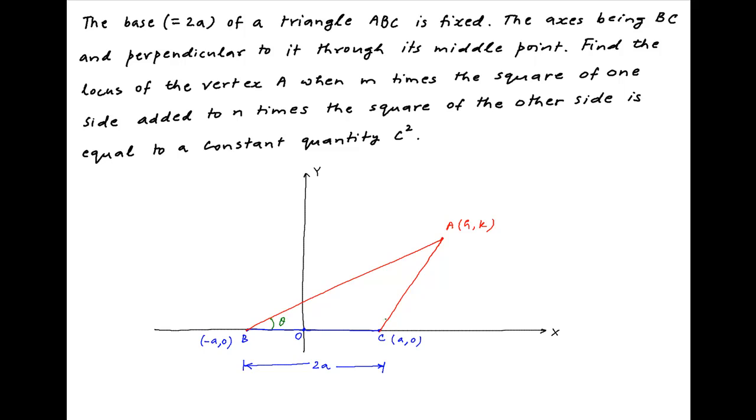Let's assume that the base angles of triangle ABC are theta and phi respectively. Now, drop a perpendicular from the vertex A onto the x-axis and let the foot of the perpendicular be N.